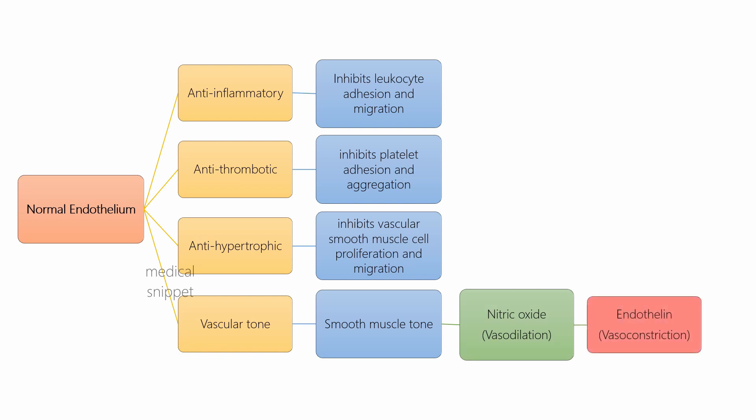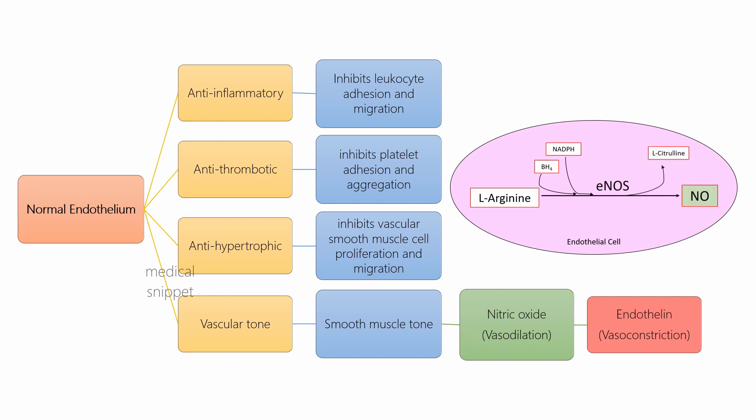Endothelium also produces endothelin, which causes medial smooth muscle contraction, thereby causing vasoconstriction. Most important is nitric oxide, synthesized by endothelial nitric oxide synthase from L-arginine. Nitric oxide not only causes vasodilation but is also responsible for the other protective properties of the endothelium.